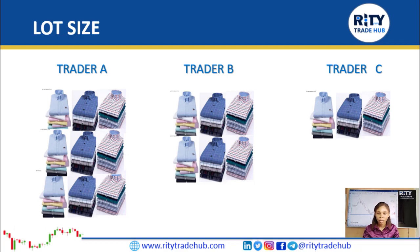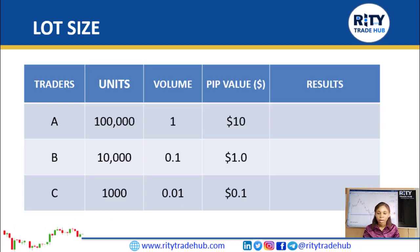You would agree that Trader A would make more money than Trader B, who would in turn make more money than Trader C. What determined how many bundles they bought is the capital they invested — that is a typical illustration of lot sizes. In this analogy, Trader A bought a standard lot size, Trader B bought a mini lot size, and Trader C bought a micro lot size.